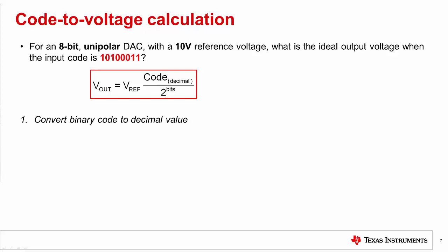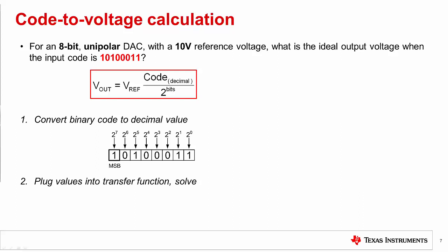In order to solve for the voltage, we first need to convert our binary value to a decimal value. This can be done by multiplying the bit value times the weight of that bit. In this case, we get 163. Inputting these values into the equation above, we can see that our output voltage would be 6.367 volts.